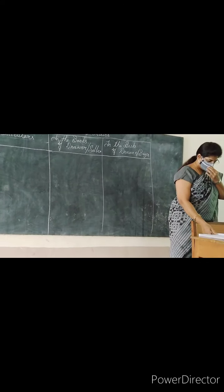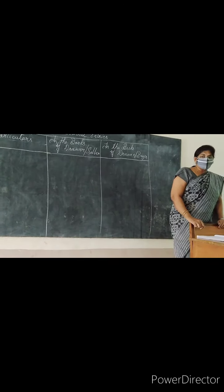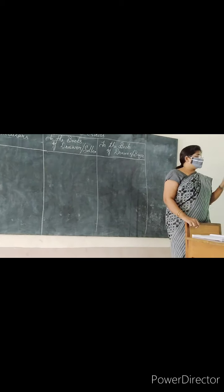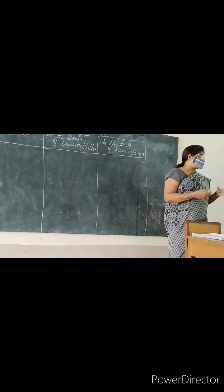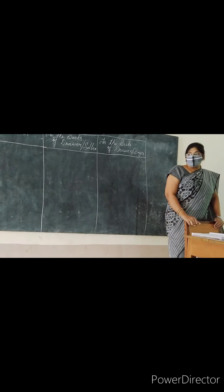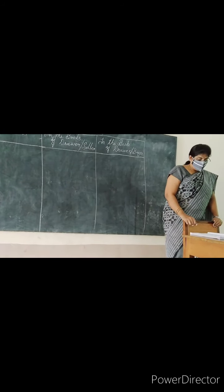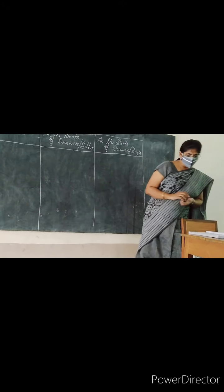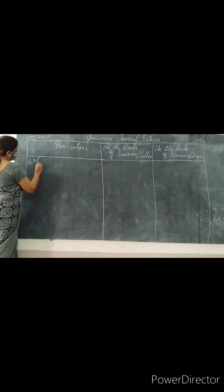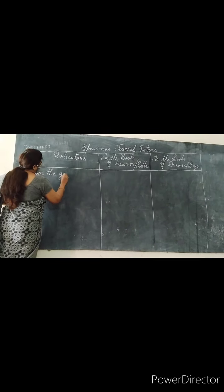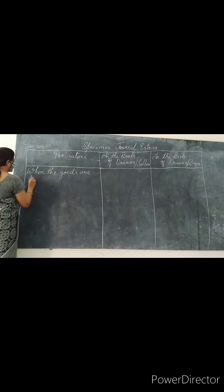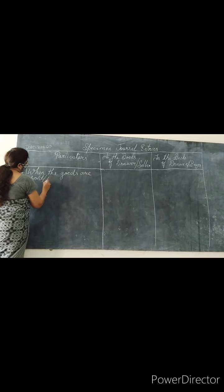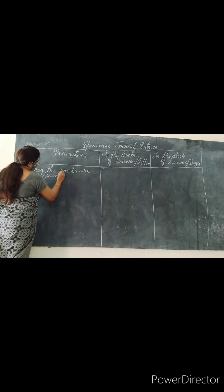So I will look at page number 9. We have specific journal entries there. Let's start with the first 5 journal entries. You will be learning the first journal entry in the actual purchase. The first one is when goods are sold or purchased on credit.